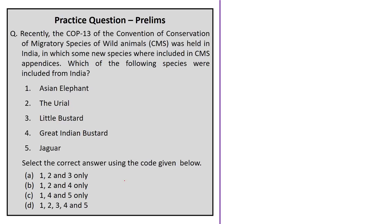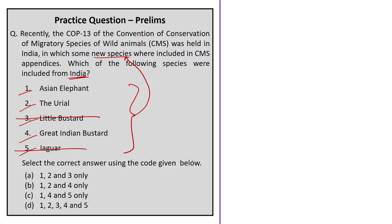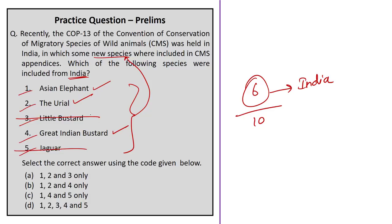The next question is based on monuments of national importance. Statement 1 — that Mamallapuram in Tamil Nadu and Gateway of India in Maharashtra are monuments of national importance — is incorrect, because while Mamallapuram is a monument of national importance, the Gateway of India is a state protected monument. Statement 2 — that monuments of national importance are taken care of by central governments along with state governments — is also incorrect, as these monuments are taken care of only by the central government through its respective circles. Since both statements are incorrect, the correct answer is option C — both 1 and 2.